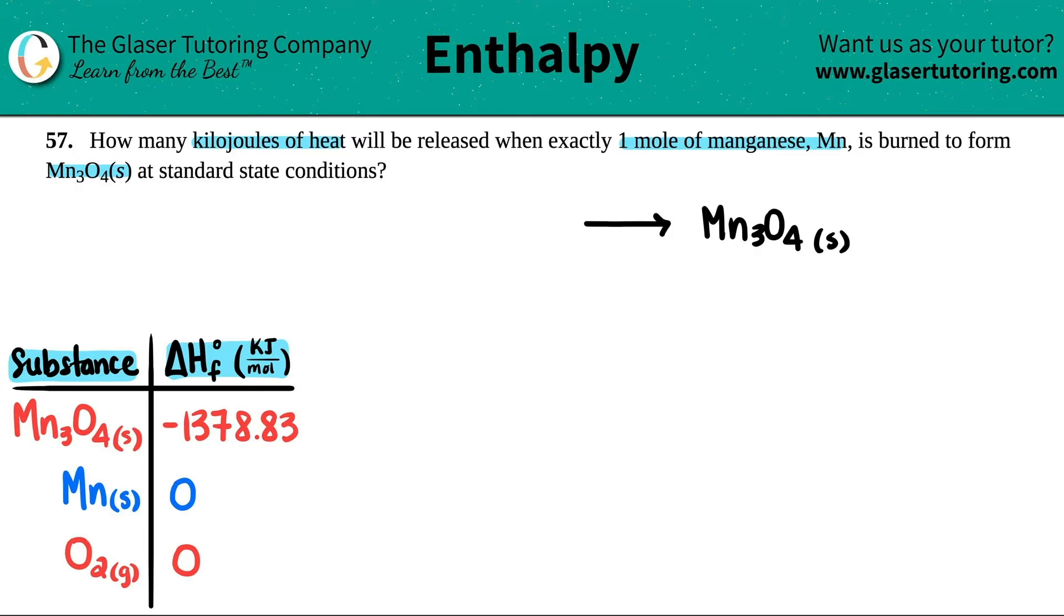Now we have to form this from its elements. It's basically talking about a combustion reaction - we're burning manganese, and when burning we always burn in oxygen. Those are the two elements, so I have Mn and O. Now, is Mn a diatomic or is it a free element? It's a free element - Mn is not on the diatomic list. All free elements are going to be solids except for mercury, which is a liquid.